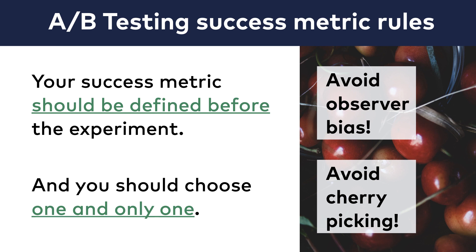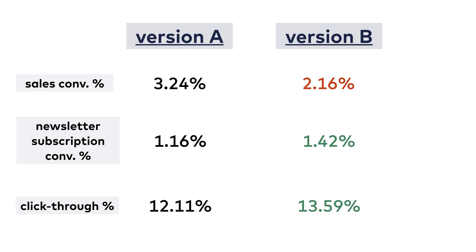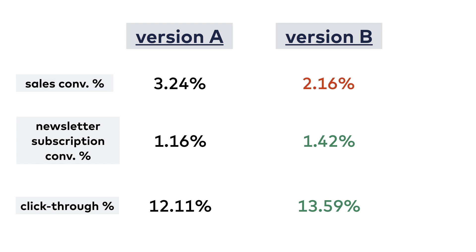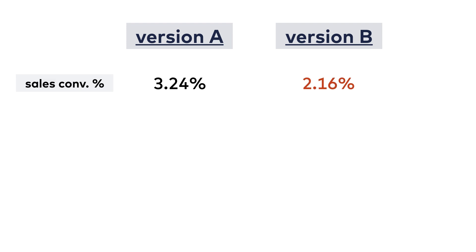But if you want to A-B test like a data scientist, you should be very pragmatic. When you have three success metrics, or even worse, when you choose your success metrics after the experiment, you give yourself a chance to lie to yourself. Your brain will automatically focus on metrics that support your new idea and ignore those that contradict it. When you have three metrics, you can easily convince yourself to ignore the one that doesn't favor your new variation. But if you have only one success metric, you have no other choice but to listen to that one single number.